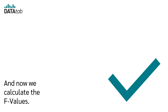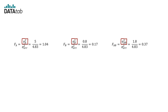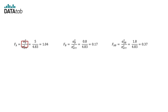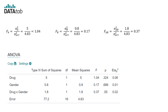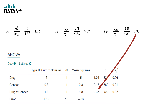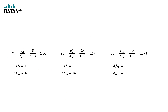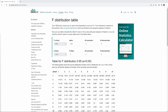Now we calculate the F-values by dividing the variance of factor A, B, or the interaction by the error variance. The F-value for factor A = 5 ÷ 4.83 = 1.04. We do the same for F_B and F_AB. These match the DataTap results exactly: 1.04, 0.17, and 0.37. For the p-value, you need the degrees of freedom and the F-distribution. You can either read the critical p-value in a table or use software. A table of critical F-values is available on DataTap — at a 5% significance level, if the critical value exceeds the calculated F-value, the null hypothesis is not rejected.